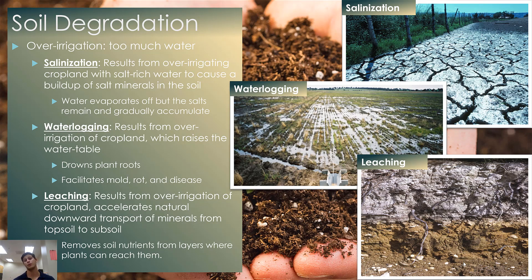Now that we know what soil is, why it's important in agriculture and environmental systems, and how long it takes to form, we're going to look at ways that soil can be degraded. There are three primary causes of soil degradation: over-irrigation, over-grazing, and over-fertilization. Each has specific problems directly associated with it, and each has solutions. On the exam, I'll expect you to know all three forms, their problems, and ways to remedy them.